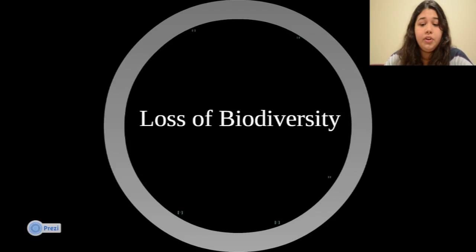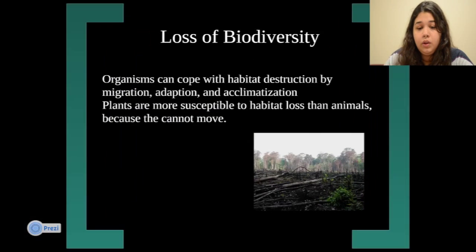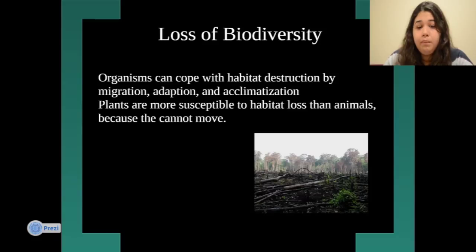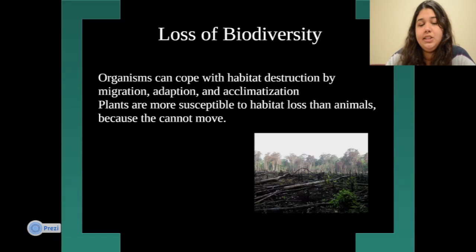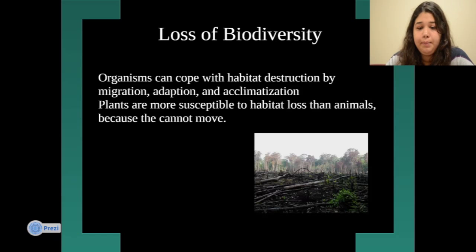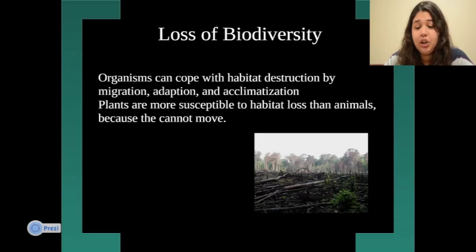The next section covers loss of biodiversity. Biodiversity refers to the diversity of animals, plants, and everything in our environment, and it's very important to maintain it. Organisms can cope with habitat destruction through migration, adaptation, or acclimatization — three ways they can respond to occurring habitat destruction.